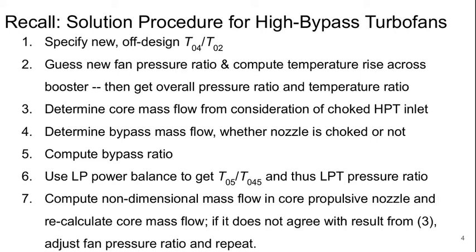Here's a brief reminder of the solution procedure developed last time for high bypass ratio two-shaft turbofan engines. We specify the off-design T0.4 over T0.2, then guess a new fan pressure ratio and compute the temperature rise across the booster. You can then get the overall pressure ratio and temperature ratio. We determine the core mass flow from the choked high pressure turbine inlet flow, then determine the bypass mass flow and whether the bypass nozzle is choked. Then compute the bypass ratio, use the low pressure shaft power balance to get the total temperature ratio across the low pressure turbine and also the pressure ratio across that turbine. Then compute the non-dimensional mass flow in the core propulsive nozzle at its exit and recalculate the associated core mass flow. If that doesn't agree with step three, adjust the fan pressure ratio and try again.